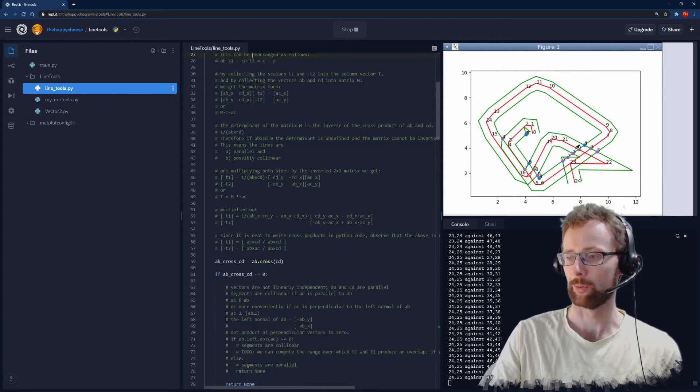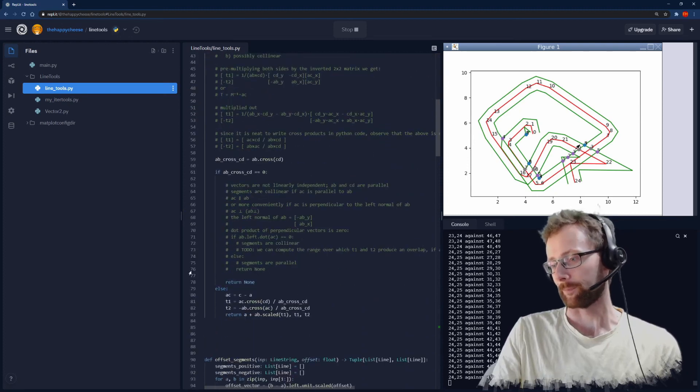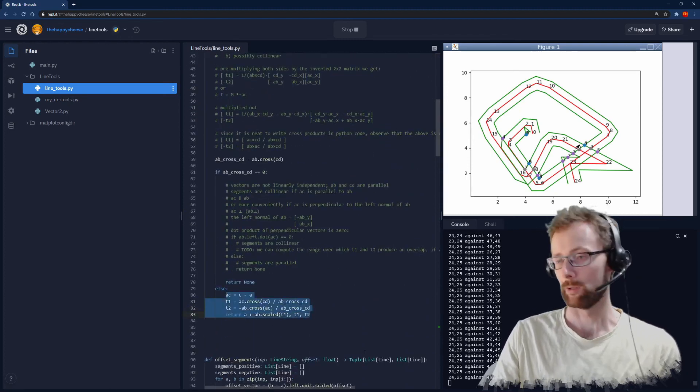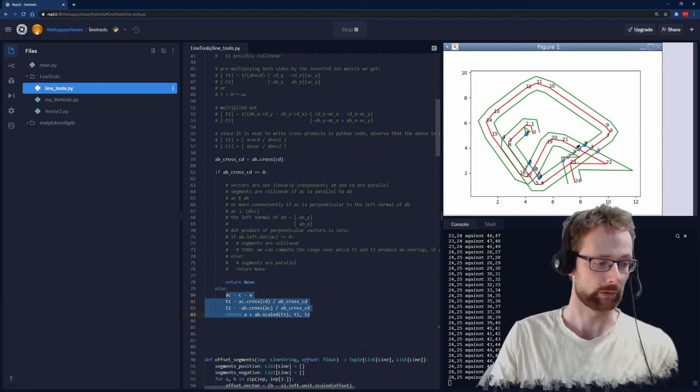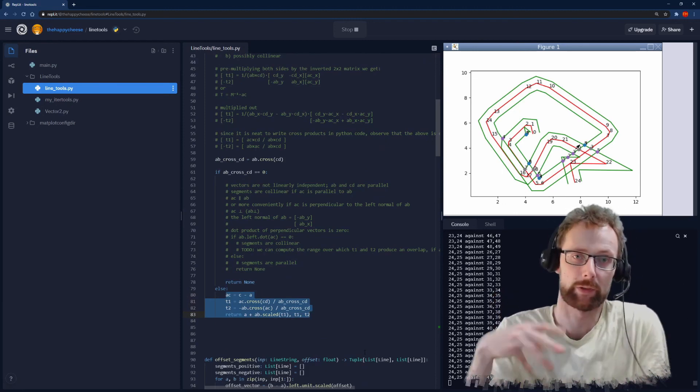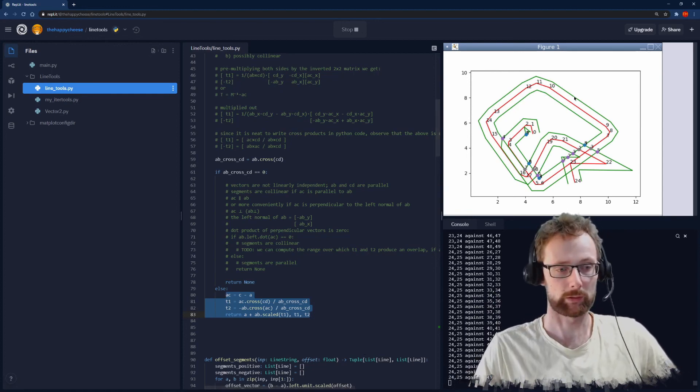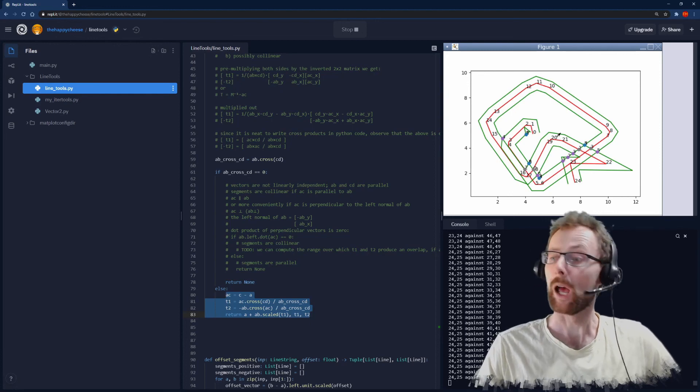There's basically the whole process that I just went through written out in comments here, but you can see at the end the solution is very very simple. It's just a bunch of cross products divided by each other and you get the result, and I'm using it you see the red lines being offset using that very algorithm.